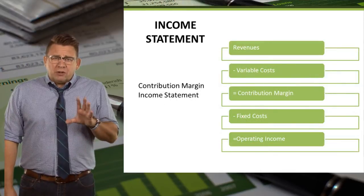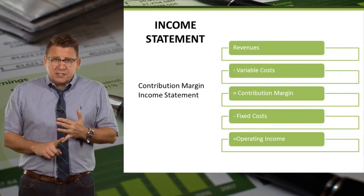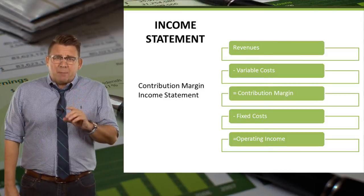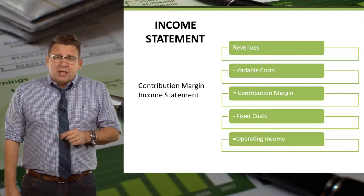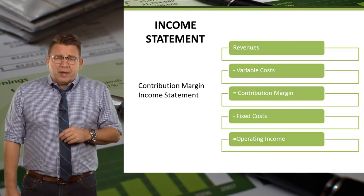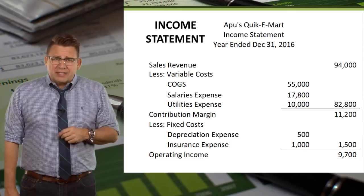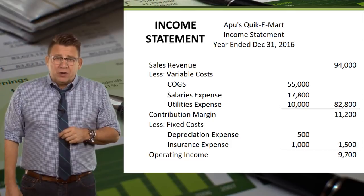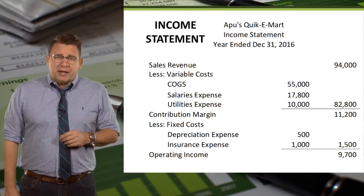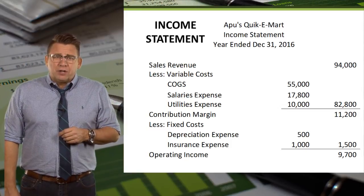Contribution margin is then used to cover fixed costs and normal profits. So from contribution margin, we subtract fixed costs, and that equals our operating income. This is the same operating income that we have when we use the multi-step format. Here you can see the same data from the multi-step income statement rearranged into the contribution margin format. Notice that operating income is still $9,700.